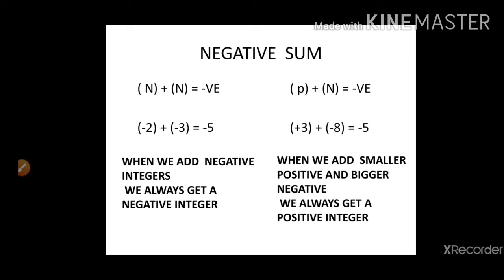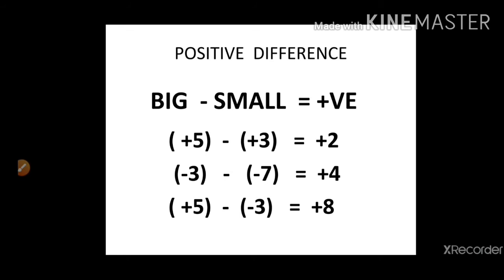The negatives are more by five, so plus 3 and minus 8 gives minus 5. Now for positive difference — when we subtract and get a positive answer, remember: whenever a smaller number is subtracted from a bigger number (big minus small), we always get a positive. For example, six minus two, seven minus three always give positive answers. So plus 5 minus plus 3: from five positives taking out three positives gives two positives.